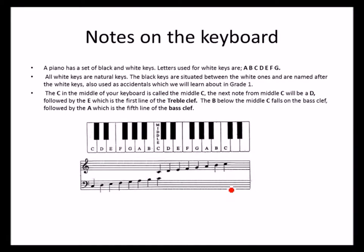Let's take a look at notes on the keyboard. A piano has a set of black and white keys. The letters used for keys are the same alphabet that we use in music, from A counting to G: A, B, C, D, E, F, G. These are the letters that we use in music and for our white keys.